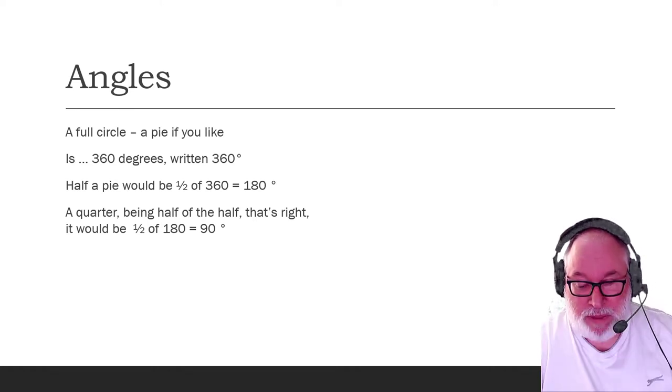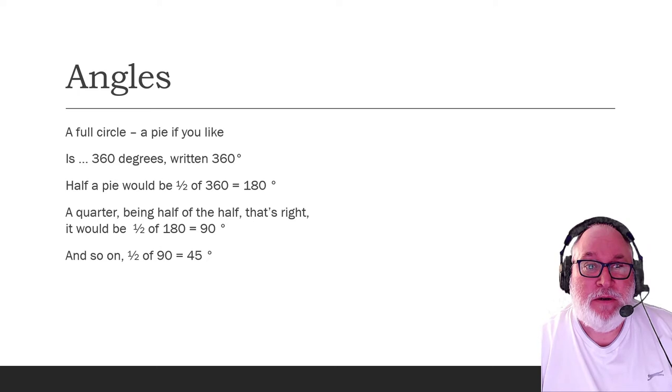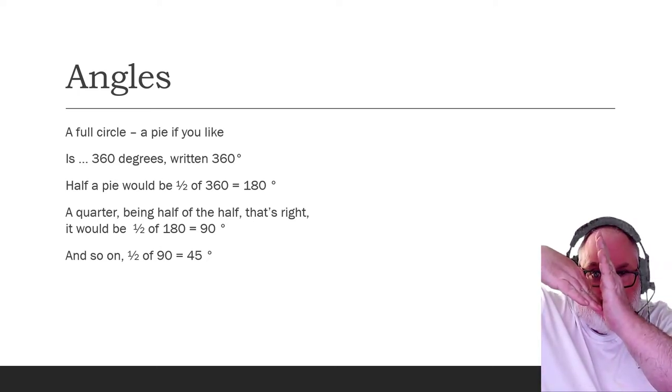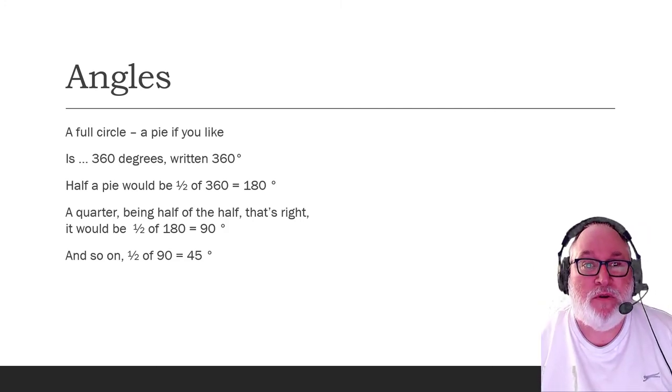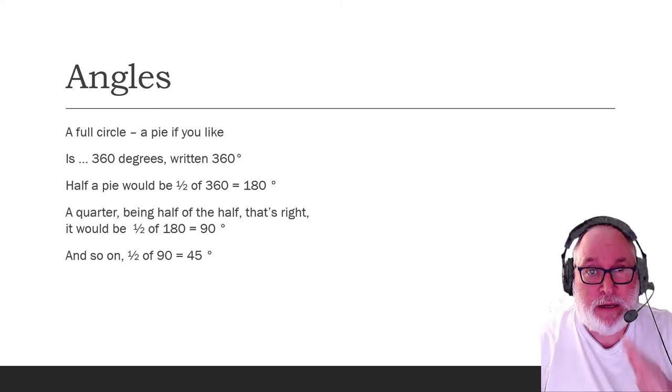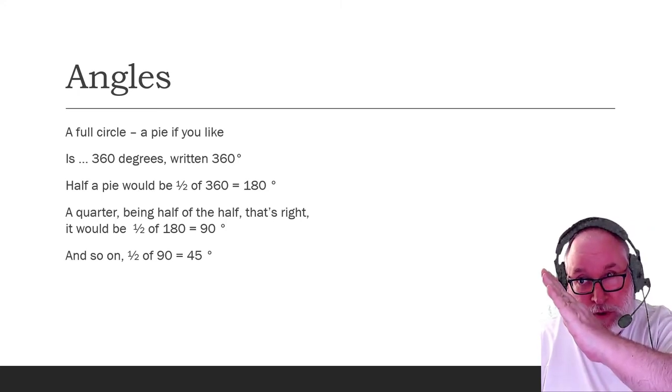So this is just us working with fractions and angles. A quarter is half of a half, so it's half of 180, which would be 90. So a quarter of 360 is 90 degrees. And half of that, 45 degrees. So half of 90, 45 degrees. So we're talking about 45 degree angles.